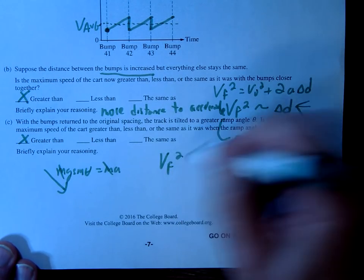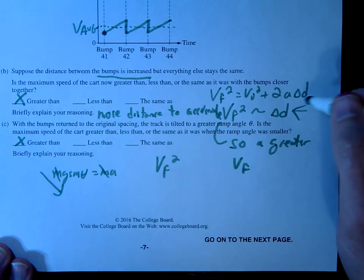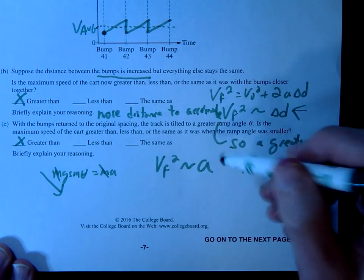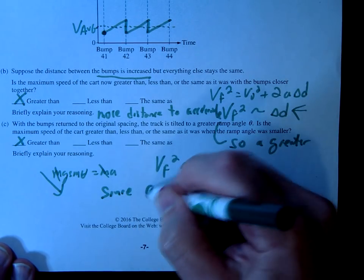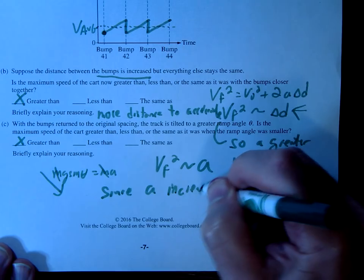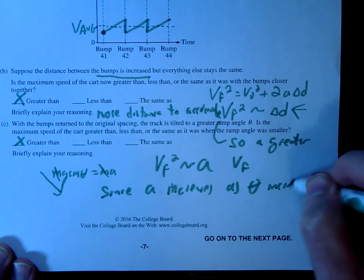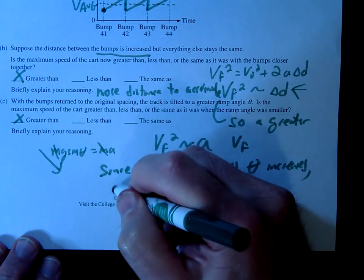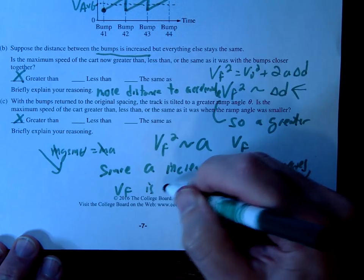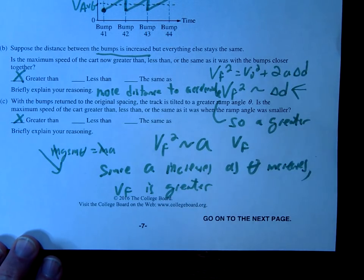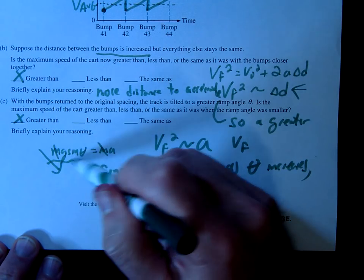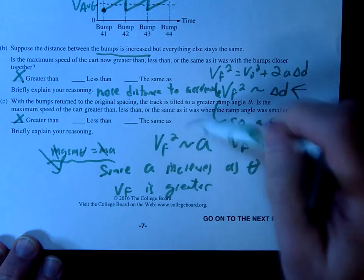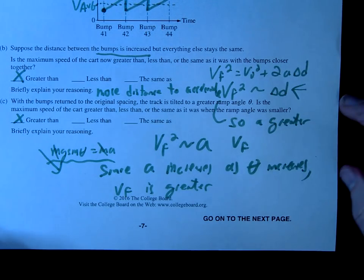So again, this would be greater than. And again you can point back to this equation: VF² = V₀² + 2aΔD. In this case we'd say the proportionality is with the acceleration. So if there's more acceleration—since a increases as θ increases—for the same reason I just explained, there will be a greater final velocity. And again, in your explanation you should go into more detail but point this out: acceleration is greater, so the velocity will also be greater.